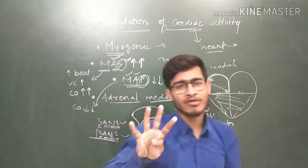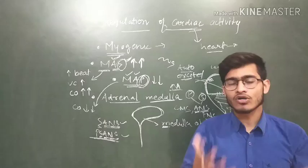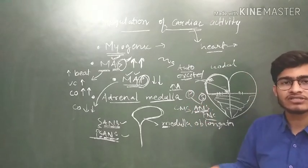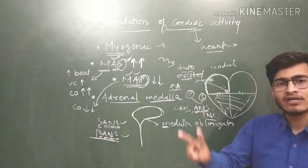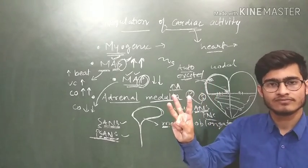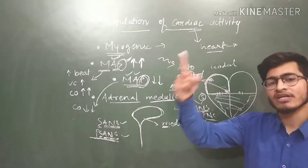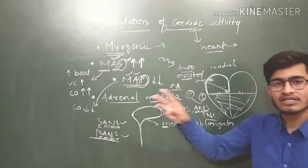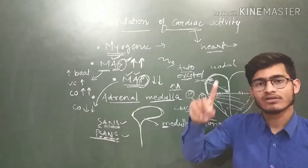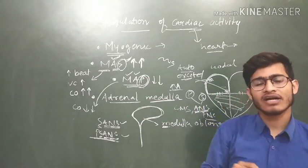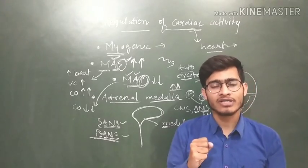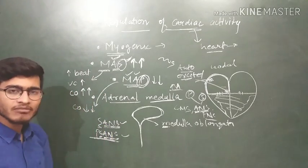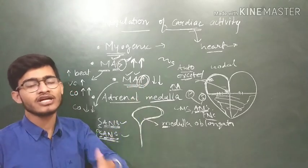So, there are four different ways in which the activity of heart can be regulated. The very first thing that you have to understand is heart is auto-regulated because it has some nodal tissues in this chamber which are auto-excitable. So, MASS will increase cardiac output because it will increase the heartbeat and ventricular contraction. Second case is MAP, medulla oblongata, ANS, parasympathetic. It will decrease the cardiac output because it will decrease ventricular contraction and heartbeat rate.